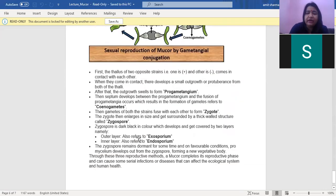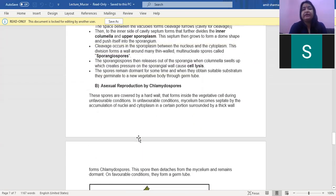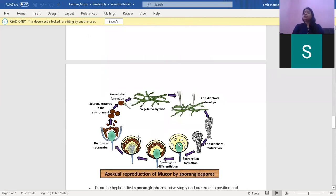That was all about the life cycle of MUCR. Before I end this lecture, let us recapitulate. MUCR reproduces by all three methods: vegetative, asexual reproduction, and sexual reproduction. Vegetative reproduction occurs by fragmentation. Asexual reproduction occurs by three types: by sporangiospore, by chlamydospore, and by oidiospore. And sexual reproduction occurs by gametangial copulation. Thank you so much, students. We'll meet up again.